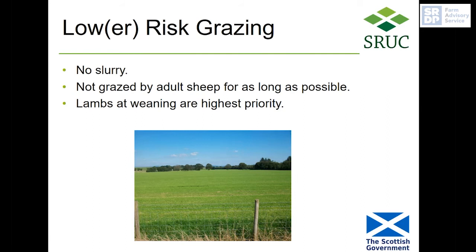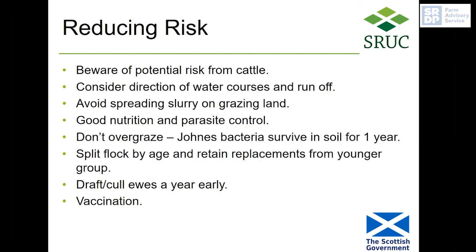Lower-risk grazing means fields that haven't been grazed by adult sheep for as long as possible. Ideally they won't have had slurry put on them, as there's potential risk there. A reseeded field, for example, won't have been grazed by adult sheep and will also be good for worm control — lambs at weaning are the highest priority. Beware of the potential risk from cattle, from water courses and runoff particularly from neighbouring properties, and watch out when spreading slurry on grazing land.